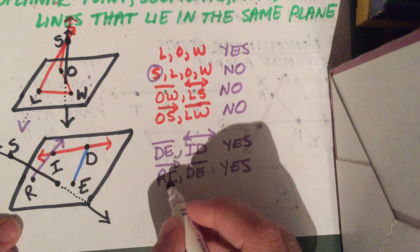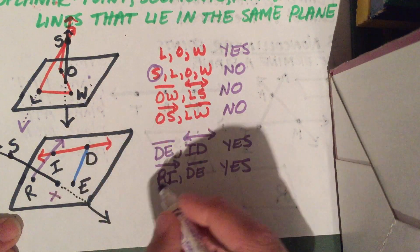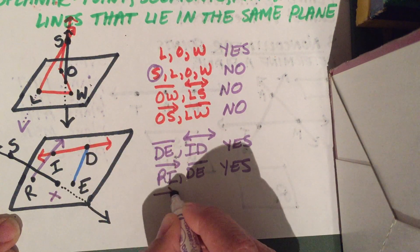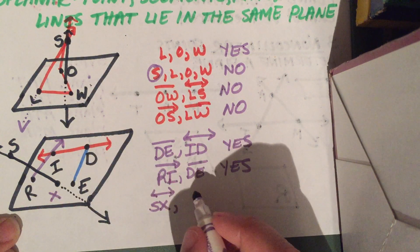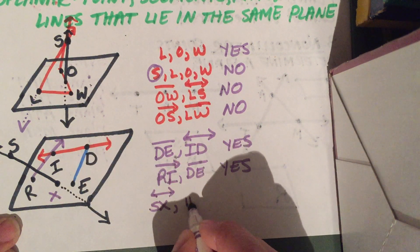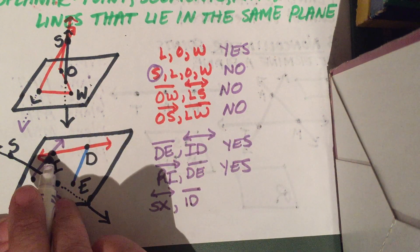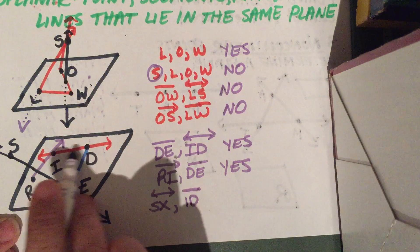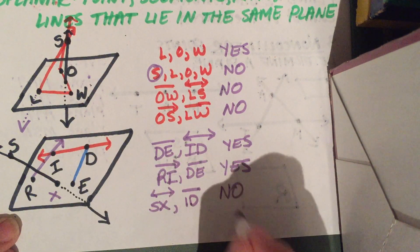So if I tried to do something, for example, let's make this point X. If I wanted to see if line SX was coplanar with segment ID. No. Because ID is a segment that's in the flat plane and S is not. So that would be no.